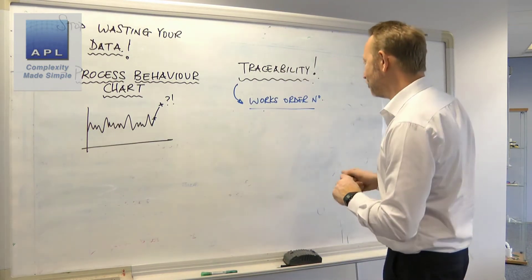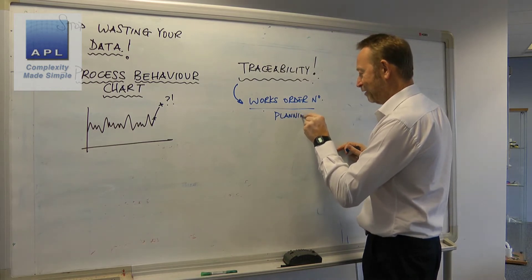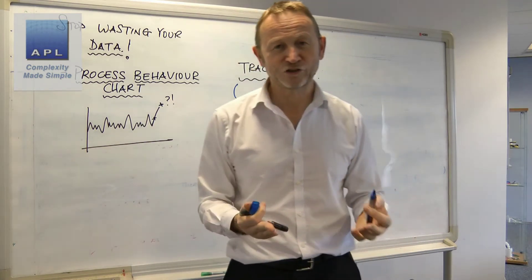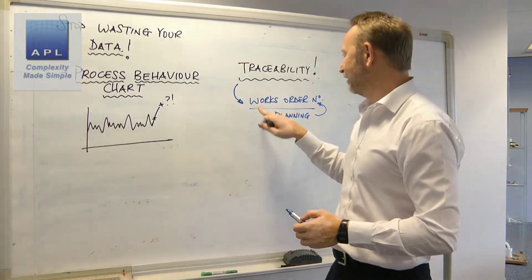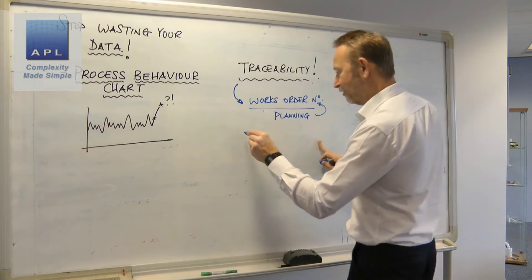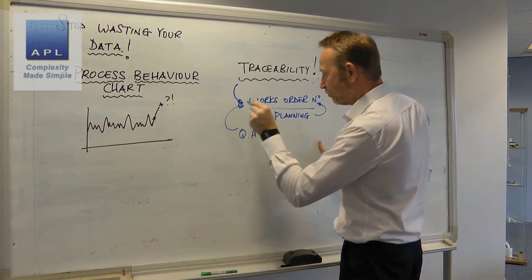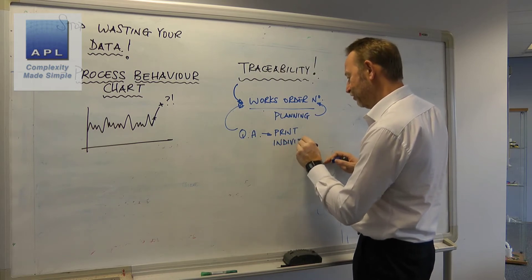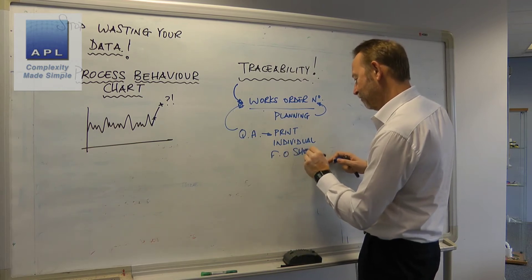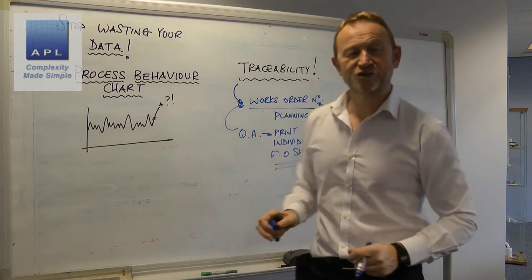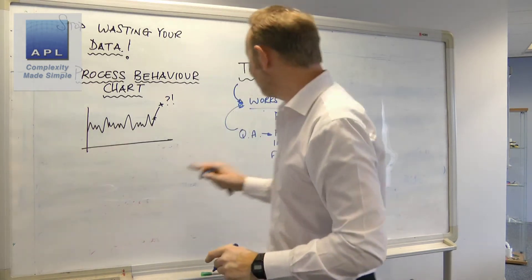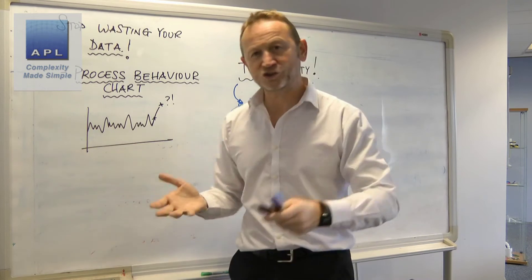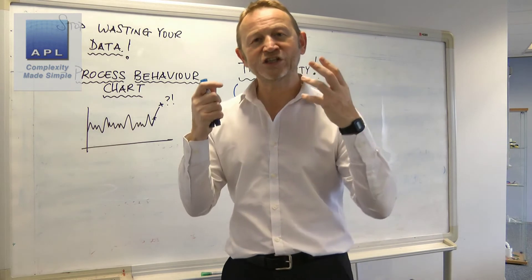I said, 'Can we just get 30 setups, 30 sets of data?' — and the answer was it's quite difficult to do. First you have to go to planning, and planning will tell you the works order numbers for the parts you're interested in. Then you go to QA, and QA sort through all their files by works order and print individual sheets — because each of those sheets contains just one data point. So suddenly I have to gather 30 of them and it's taking forever.